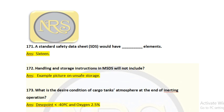Question number 172: Handling and storage instructions in MSDS will not include — the answer is example pictures on unsafe storage. They will not tell about unsafe storage or how to store things. They will talk about what actions to be taken: what to do if there is a spill, if there is contact with it, what temperature to maintain and where to maintain it — all things related to safety. Pictures are not always available in MSDS.